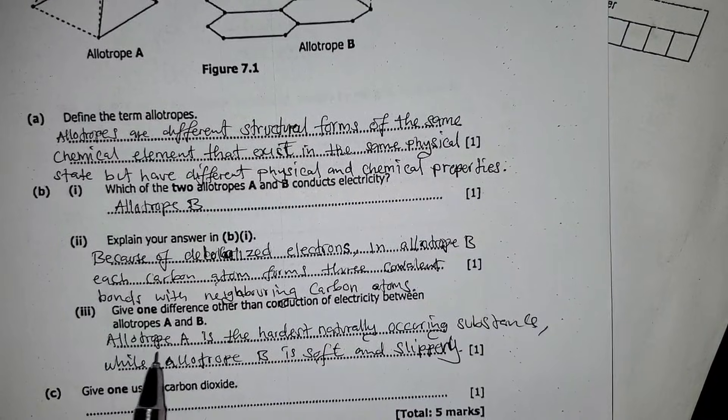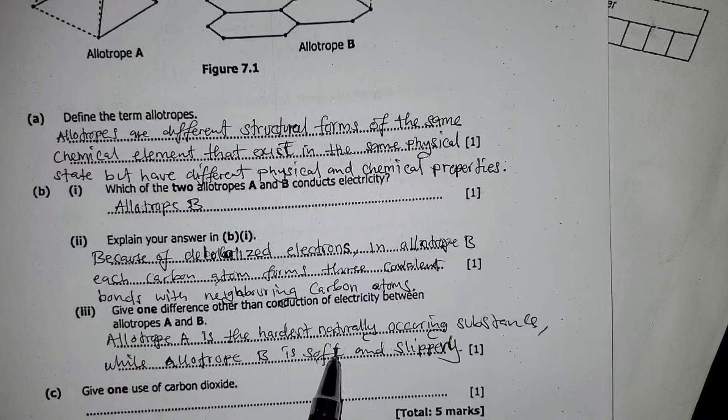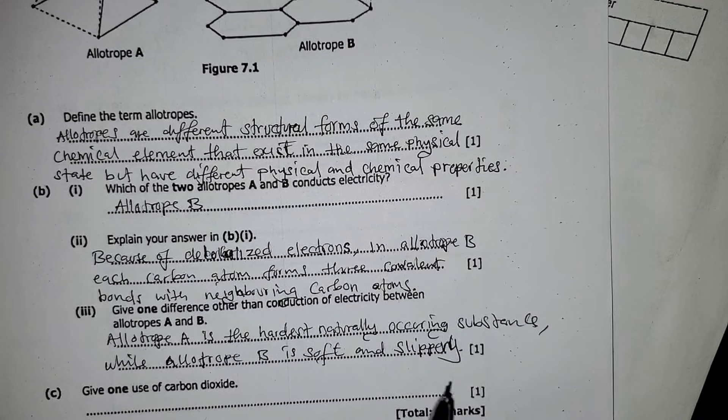So here the difference, one difference is that allotrope A is hard while allotrope B is soft and slippery. Simple.